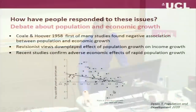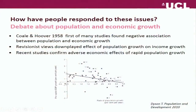This graph from Tim Dyson's excellent book on population and development shows the negative relationship between population growth and economic growth. Korea and China sit at one end, and the Democratic Republic of Congo and Madagascar at the other.